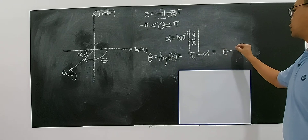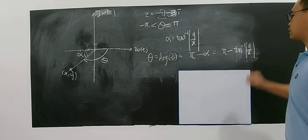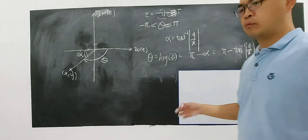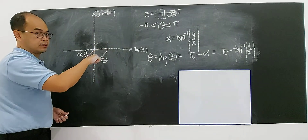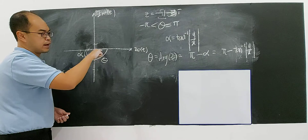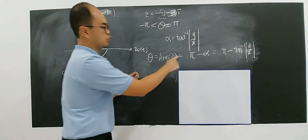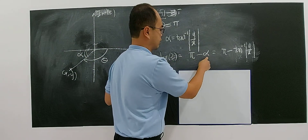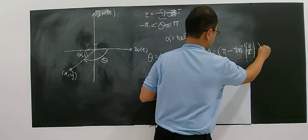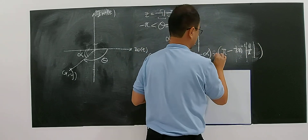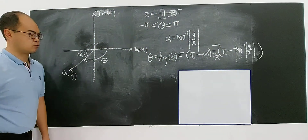Pi minus arctangent of modulus y over x — but it's still wrong. What's the mistake? Because you are moving in this angle — any angle moving in clockwise has a negative sign. So 180 minus the acute angle gives positive, but actually you need to add a negative in front of this.